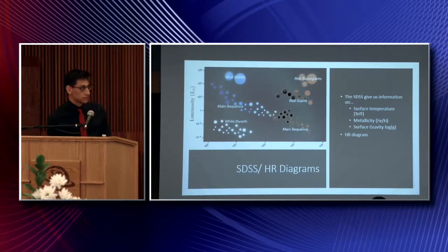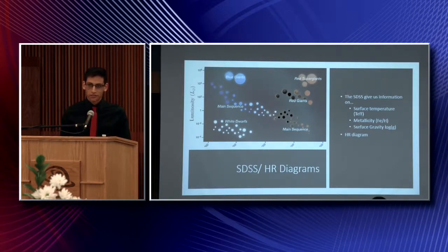And the surface gravity is the gravity at the surface of the star, just like how the gravity of the surface of the Earth is 9.81 meters per second squared.